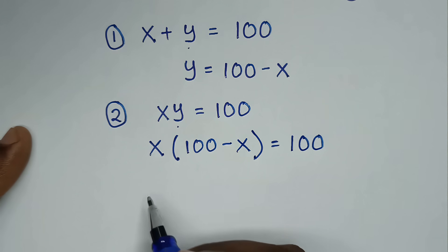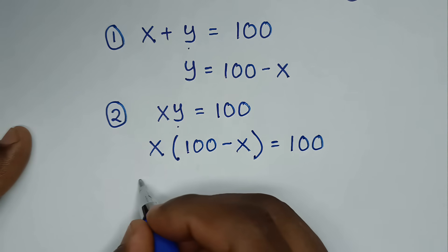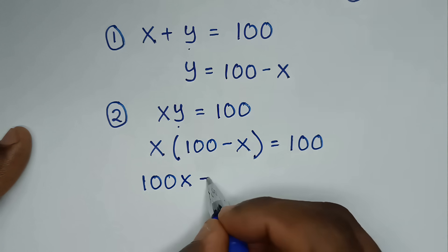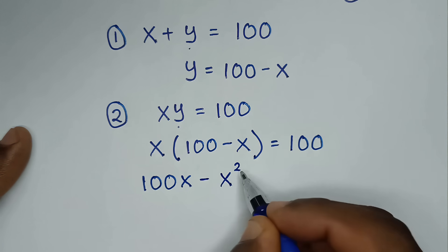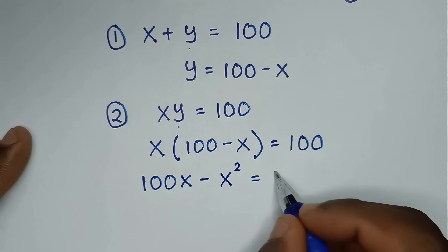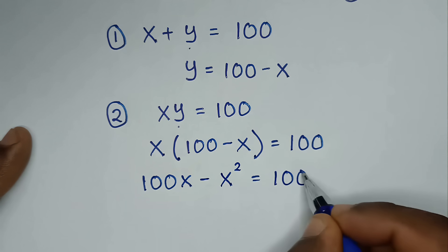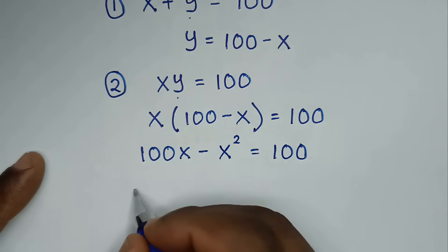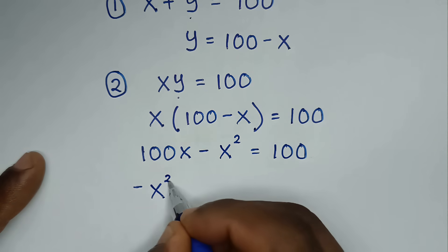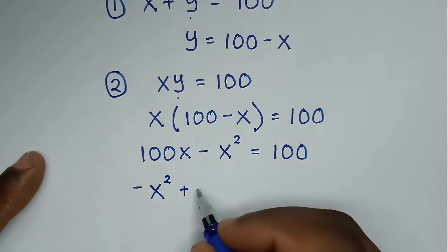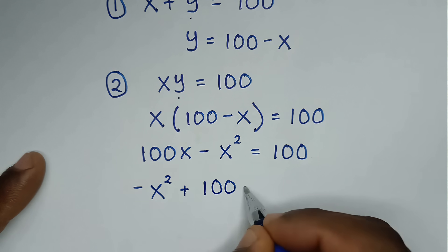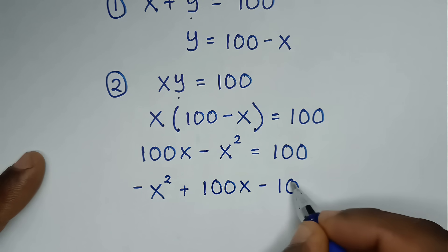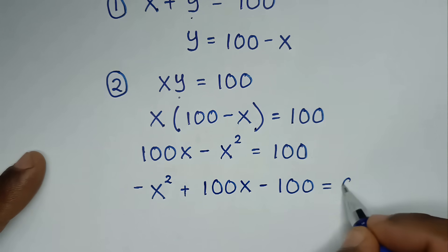Then expanding, it will be x times 100, which is 100x, minus x squared, is equal to 100. Rearranging, it will be negative x squared plus 100x minus 100 is equal to 0.